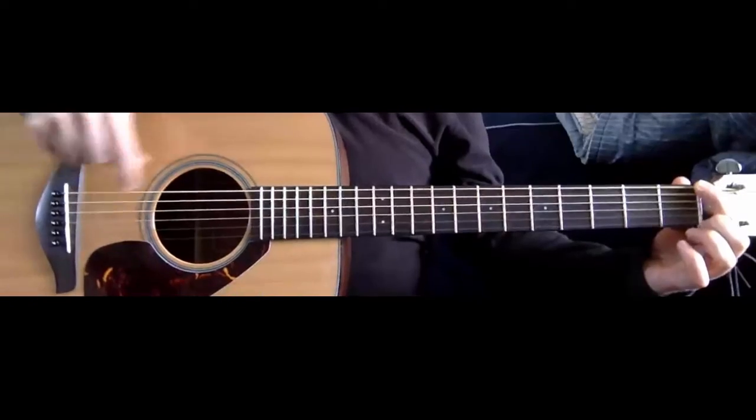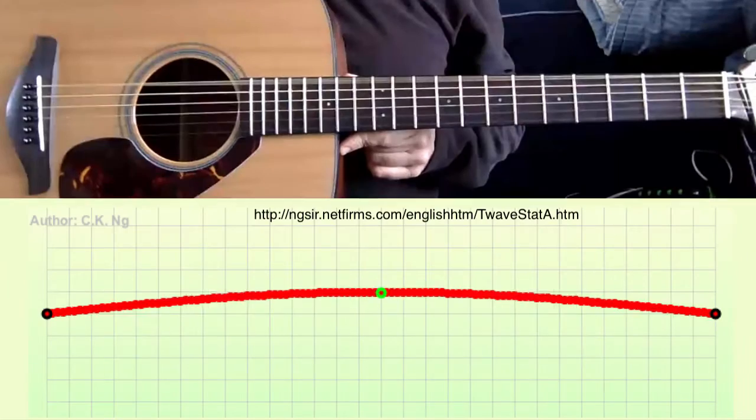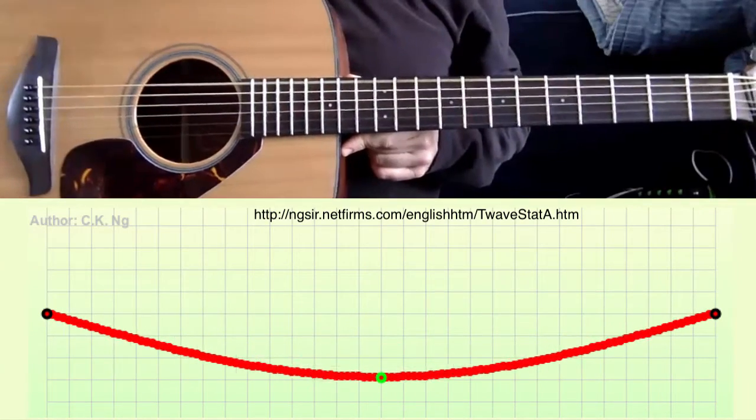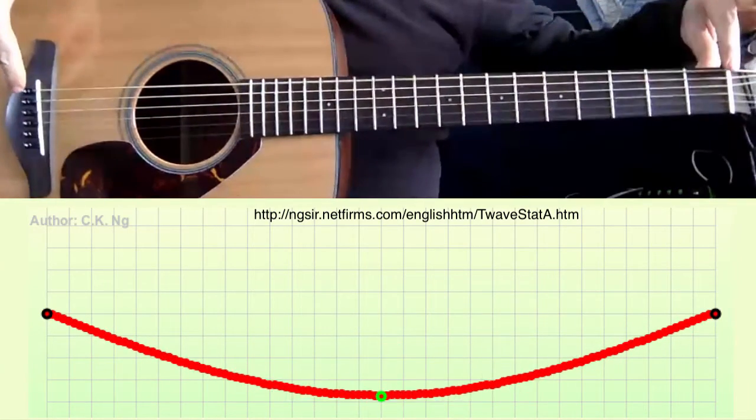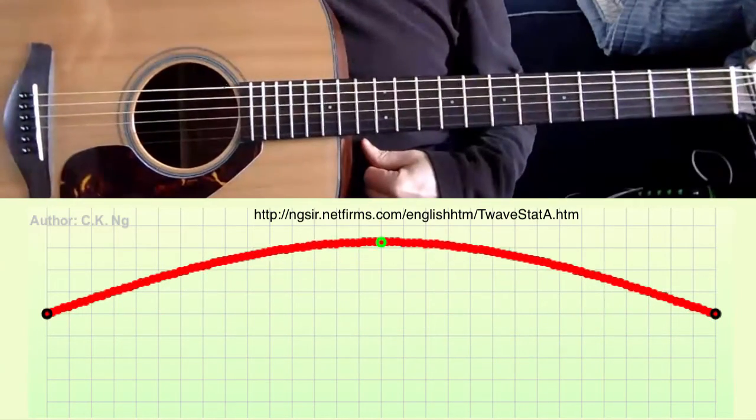So here is the first harmonic, or the fundamental. If I just pluck it like that, right here are nodes. And there's an antinode right in the middle. That's called the fundamental.